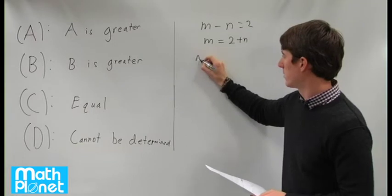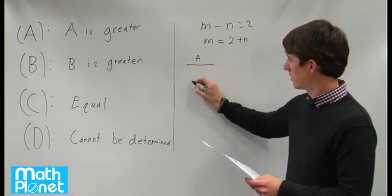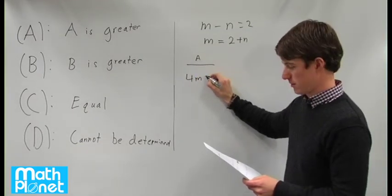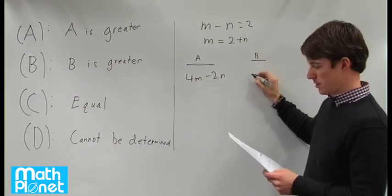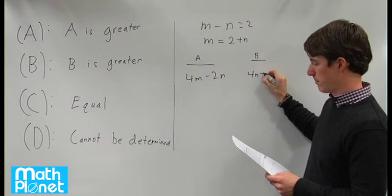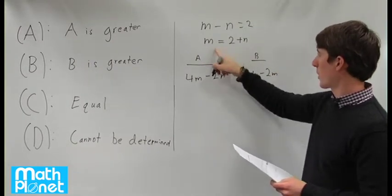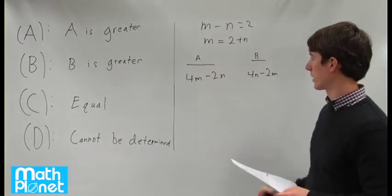In column A we have 4m minus 2n, and in column B we have 4n minus 2m. Now we can plug in m for both of these and see which one is bigger.